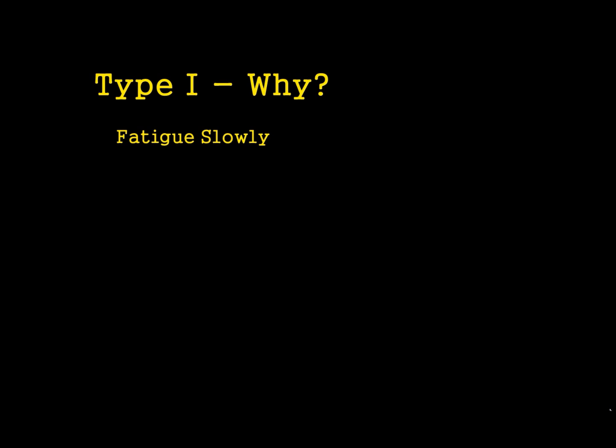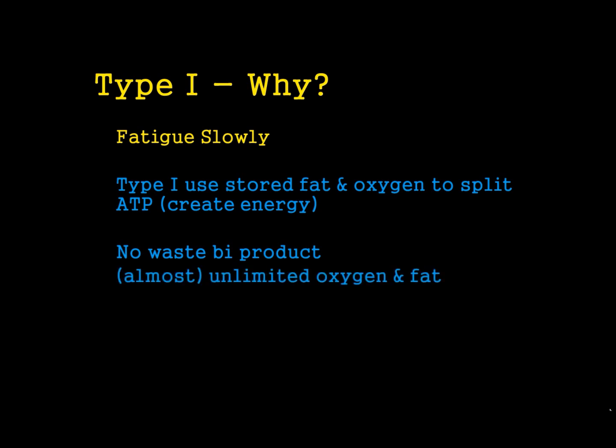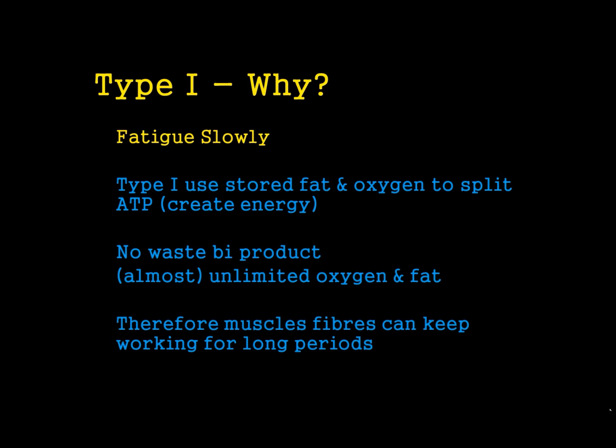One bonus is that they do fatigue very slowly. This is because of the source of energy or fuel that they use. They use stored fat and oxygen to split ATP and create energy. There are no waste byproducts, so there's nothing bad building up in our bodies that's going to stop us from exercising with these muscle fibres. In theory, we have an unlimited amount of oxygen in the air, and we do have a huge amount of body fat that we can use. Because of that, these muscle fibres have all the fuel they need, so they can just keep working for a very, very long time. And that's why they fatigue slowly.